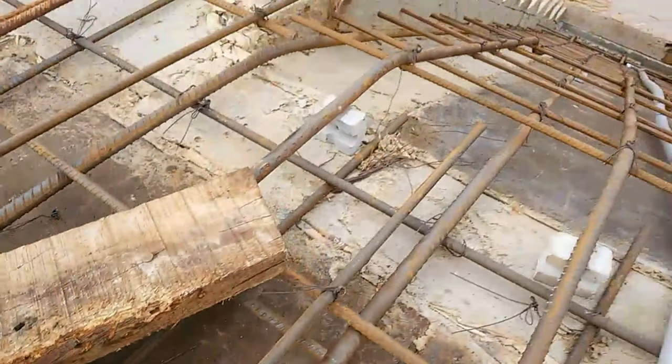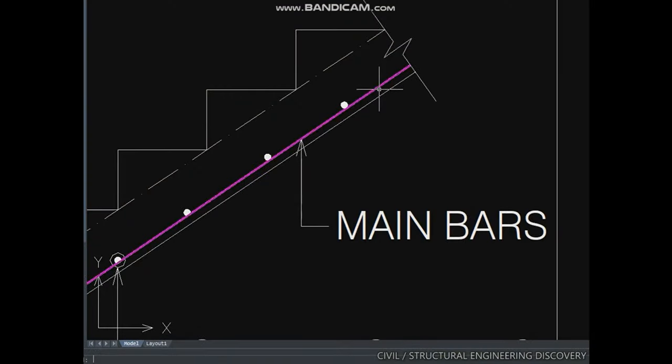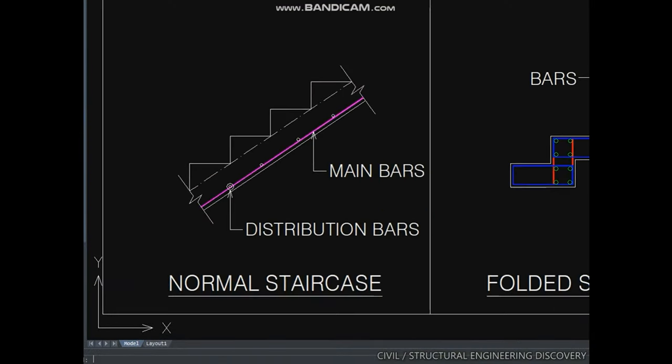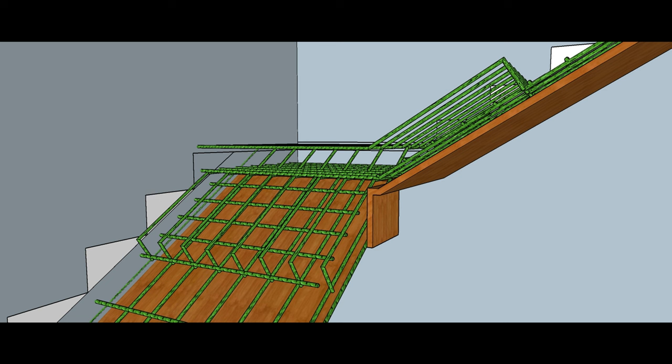Now remember your reinforcement is going to be just as if you are doing a slab roof. You are going to lay your steel horizontally and vertically and you are going to tie them together leaving a one inch space between the bottom of the concrete and of course the steel is going to be in the bottom of your slab.